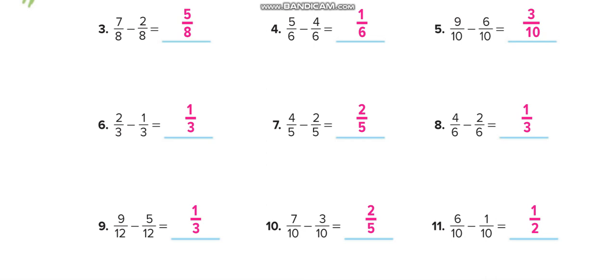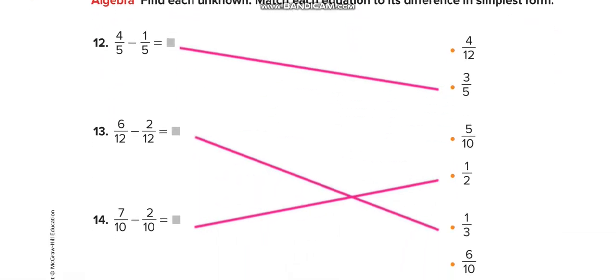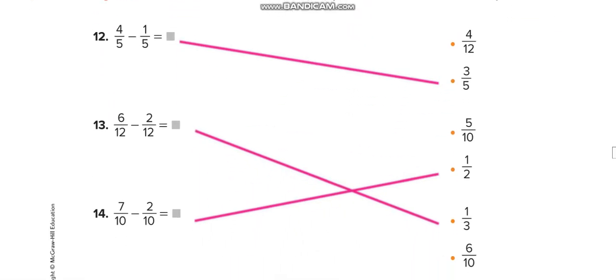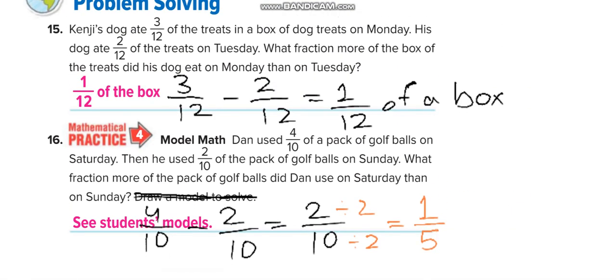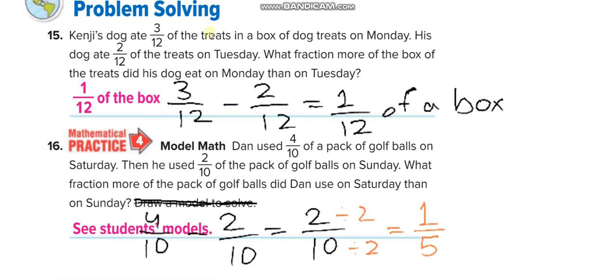Here Kenji's dog ate 3/12 of the treats in a box of dog treats on Monday. His dog ate 2/12 of the treats on Tuesday. So 3/12 on Monday and 2/12 on Tuesday.